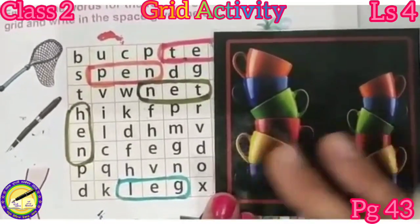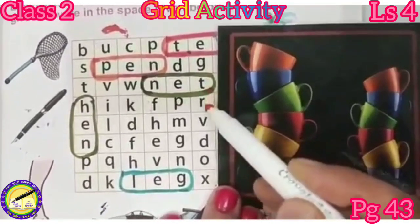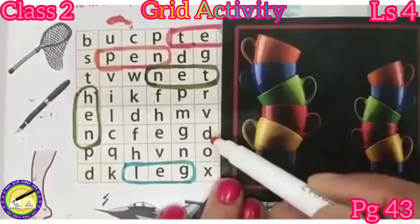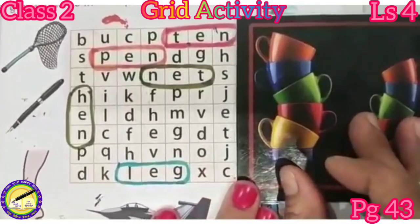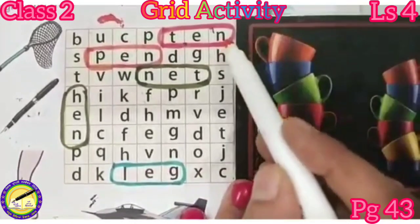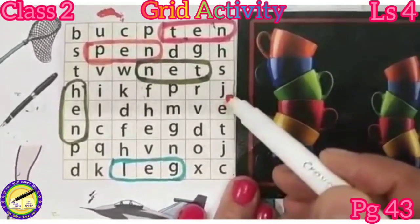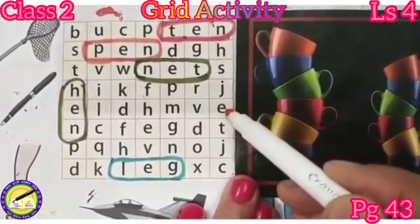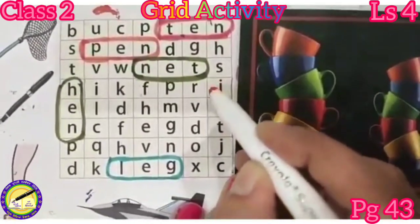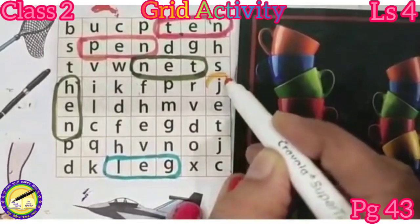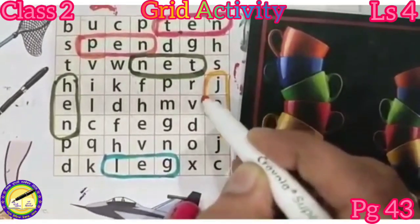Come on to the next vertical line: E, G, T, R, V, D, O, X. Next line: N, H, S, J, E, T. Yes, you got the word! J, E, T — jet. Let us encircle it.